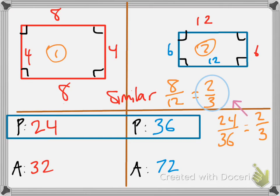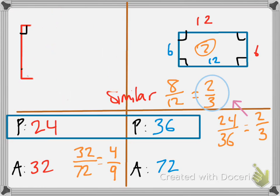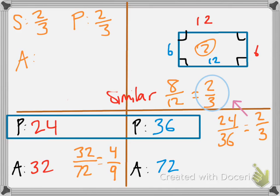What about the areas? The area of the red rectangle is 8 times 4, which is 32. The area of the blue rectangle is 12 times 6, which is 72. The ratio of areas is 32 over 72, which simplifies to 4 over 9. This is not the same as the similarity ratio, but it relates - it's 2 over 3 squared.